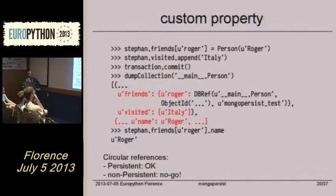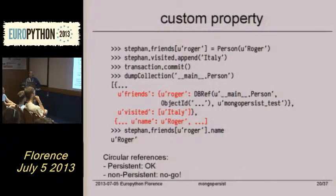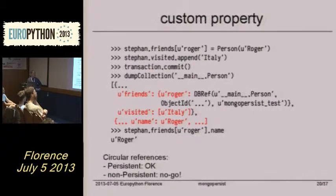It doesn't have the p-mongo-subobject set as true. The visited attribute gets extended with fele, and our new object Roger gets also inserted into the person collection, because we created a new object.